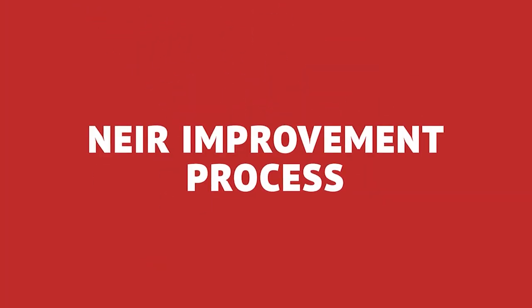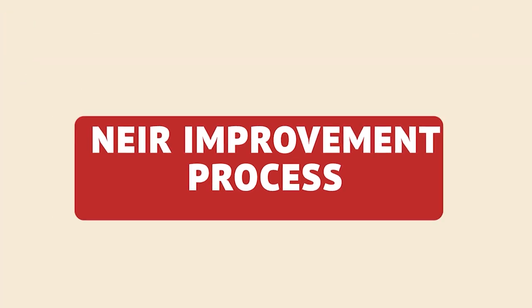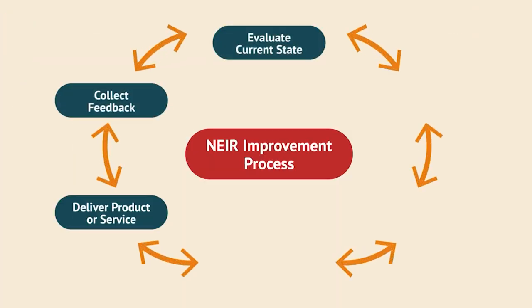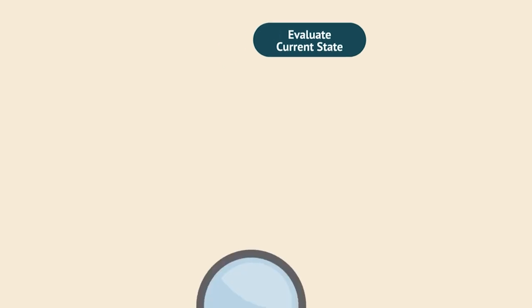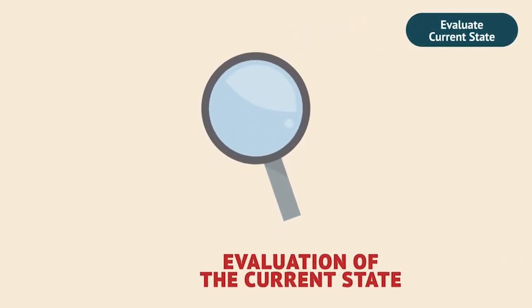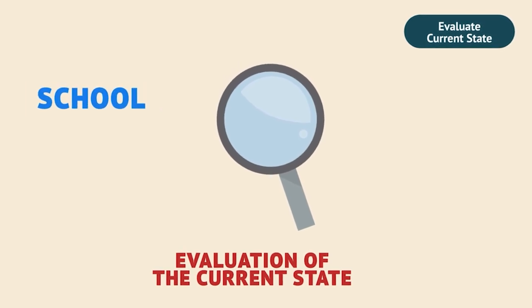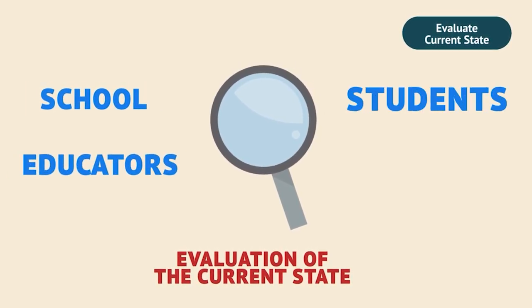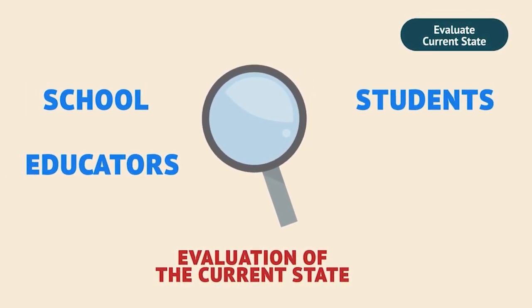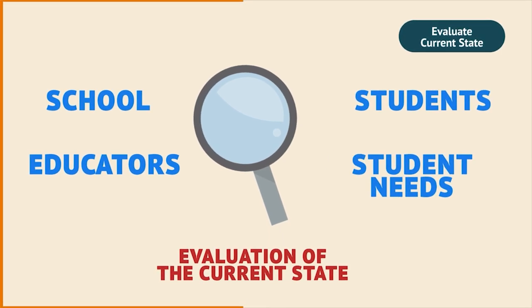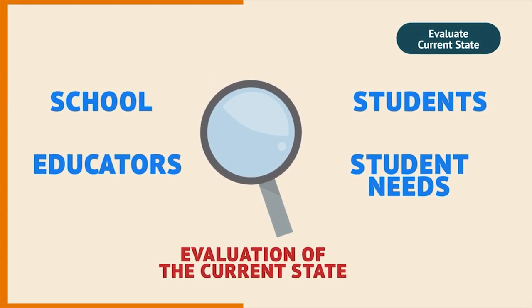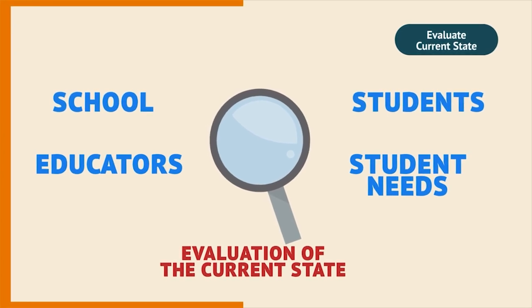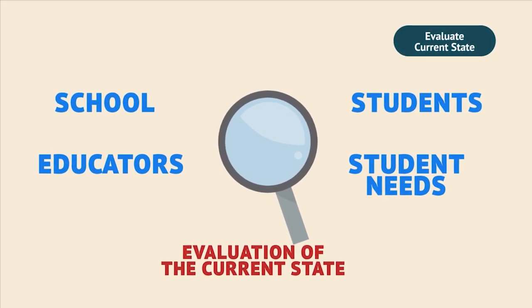The third and final part of the model is the NEAR process for improvement. This cycle is similar at the top level to many other improvement cycles, with one important difference. We begin with an evaluation of the current state of the school, educators, and students, not just an assessment of student needs. It may not be noticeable at first, but this is a significant transition from traditional models and is critical for systemic change.